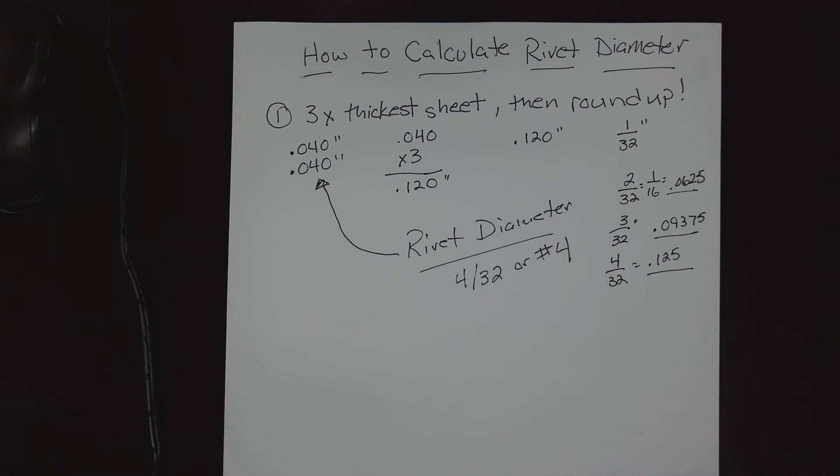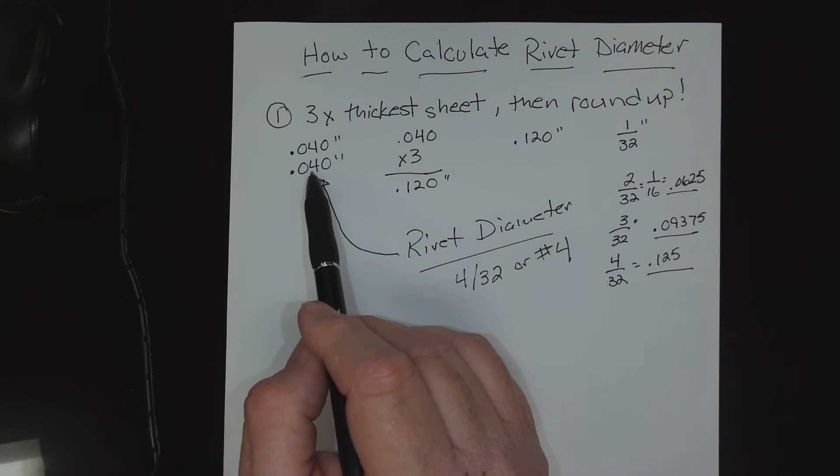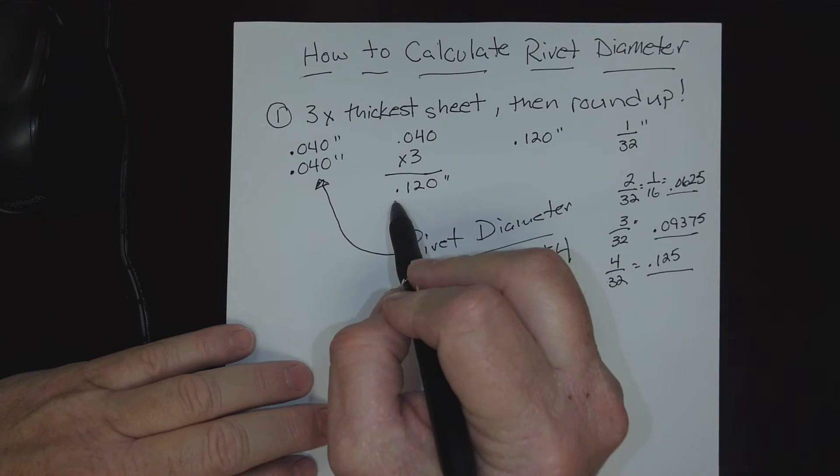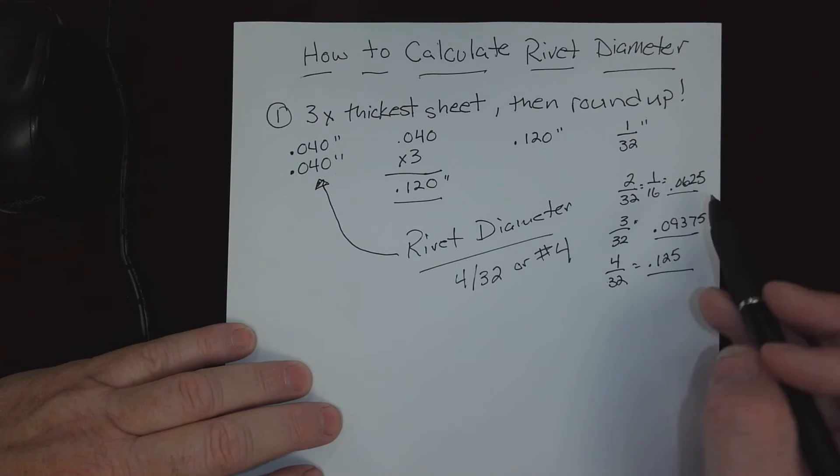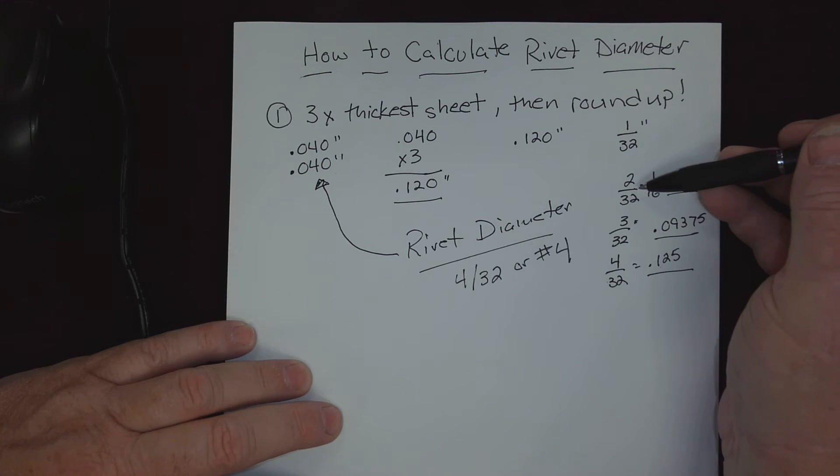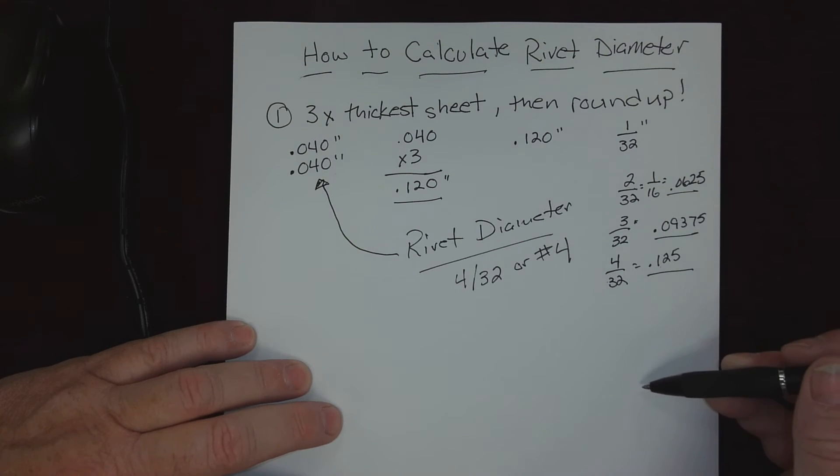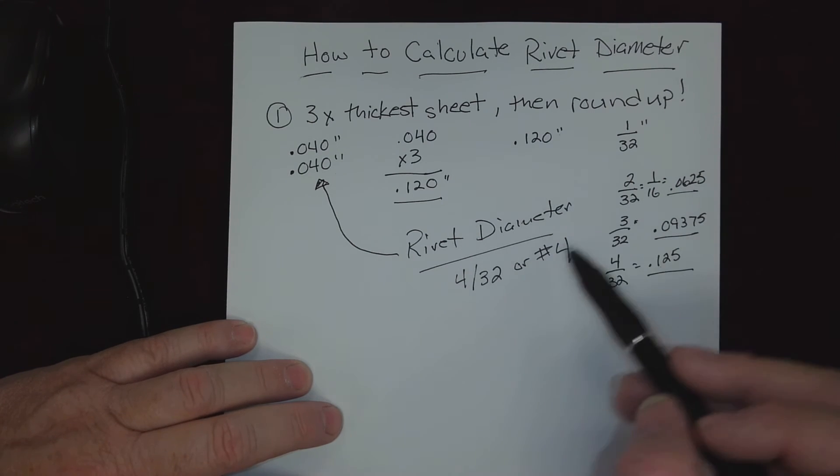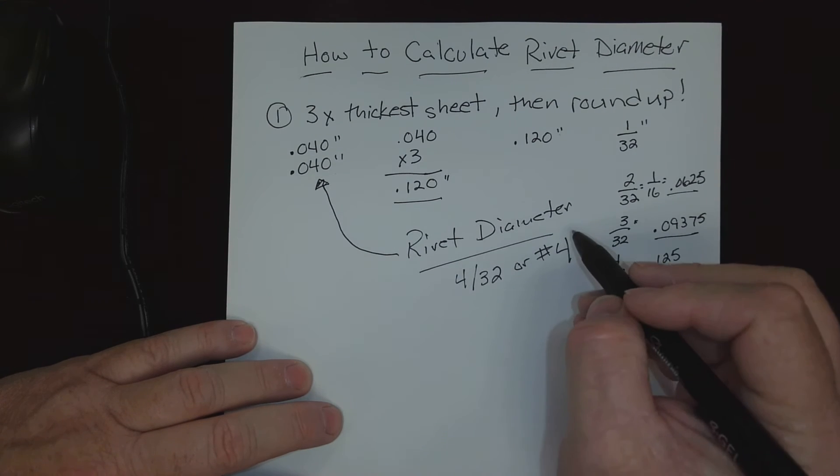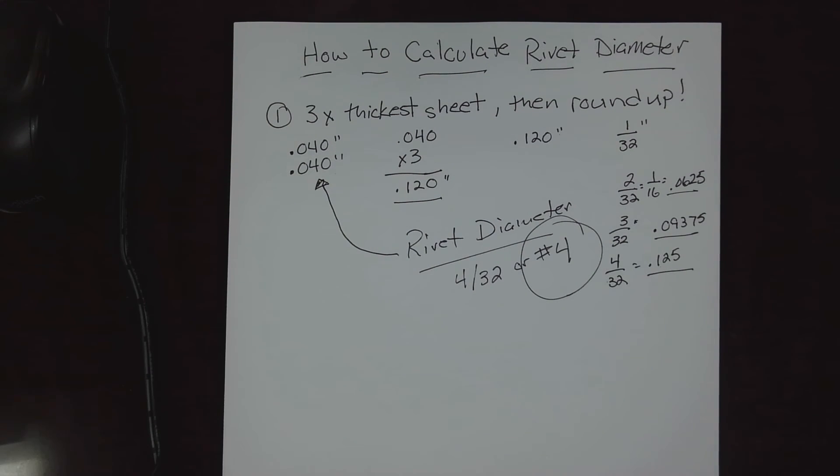Now remember the key parts to this: select your thickest sheet in your stack-up, three times that, we're going to end up with the decimal. Compare that to the decimal equivalence of all of our rivets - you can simply make a little breakdown of those in decimals. Then we simply look: in this case, this was lower; a number four was slightly higher, so we rounded up to meet the second part of our rule, and doing so landed on the number four rivet.